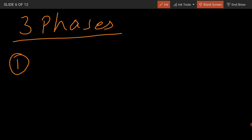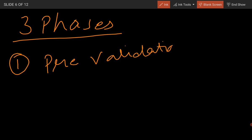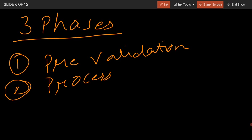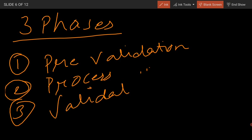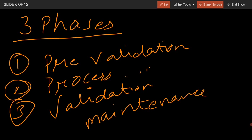The validation phases are divided into three: the first phase is the pre-validation phase, the second is the process validation phase, and the third is the validation maintenance phase.